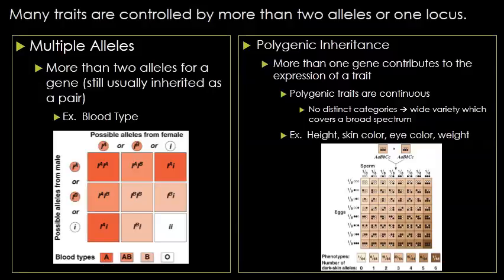Polygenic traits are traits controlled by two or more genes. This often shows a great variety of phenotypes. Skin color is the most common example. Polygenic traits are continuous traits with no distinct categories — there is a wide variety covering a very broad spectrum. You can think of them as following a bell curve. Height, skin color, eye color, weight, and intelligence are all polygenic. The bell curve shows the majority of data points near the average, with fewer and fewer data points as you move away from the average.